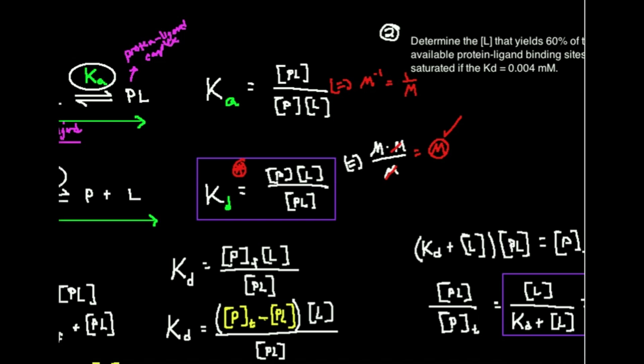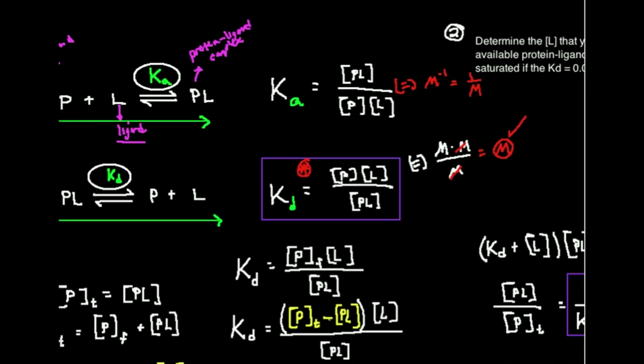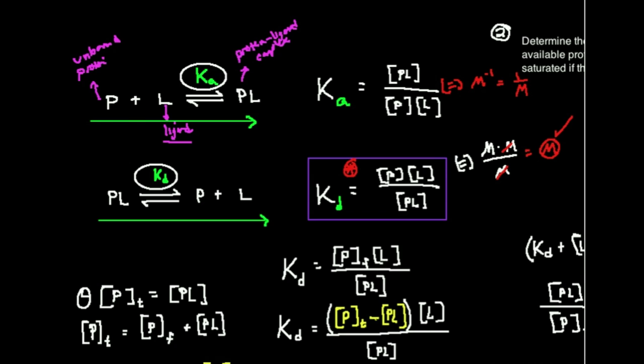Now there's another really important relationship, and I sort of just mentioned it. Notice that the expression for K_D, P times L over PL, is the reciprocal of K_A expression. It's PL divided by P divided by L. Because these expressions are reciprocals of each other, and actually we actually just reverse these reactions, it turns out there's another very important relationship here.